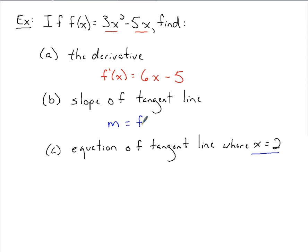So our slope here, m, is going to equal f prime of 2. Taking 2, plugging in, we've got 6 times 2 minus 5. We've got 12 minus 5, slope of that tangent line where x is 2 is going to be 7.